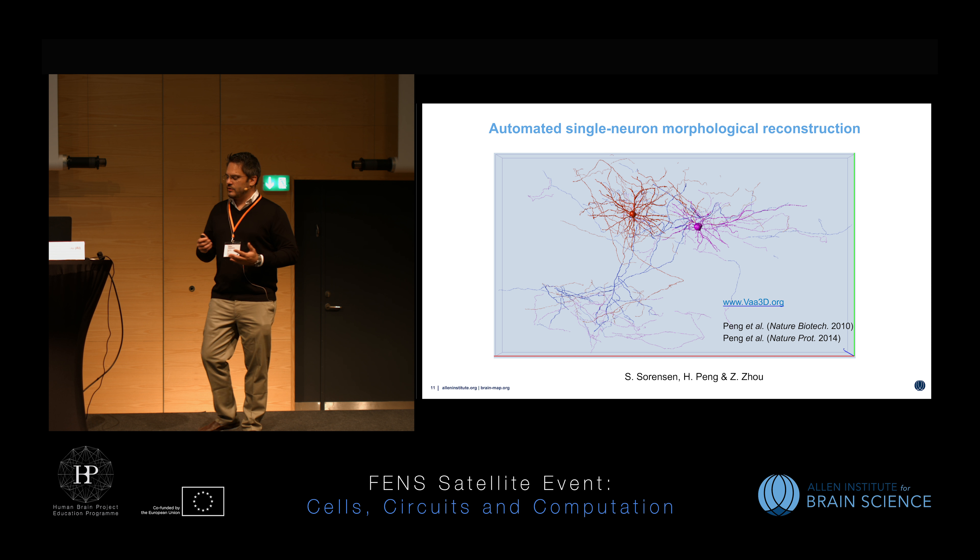Here is an example of a reconstructed morphology of a layer 5 pyramidal cell. In green you can see the basal dendrites; in purple, the apical dendrites. On the left side, in red, is the experimental response for this particular cell, and in blue you can see how the developed model captures the features of those responses. Some responses are extremely close to the experiment; others are not as close — something we are working on.